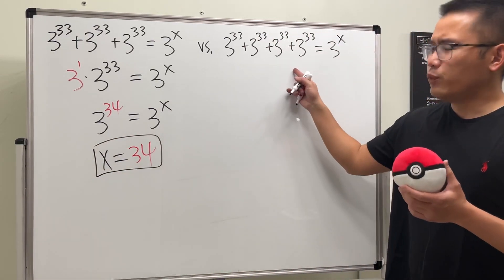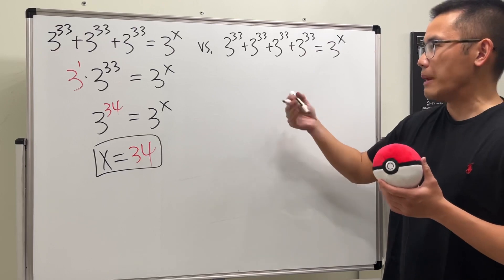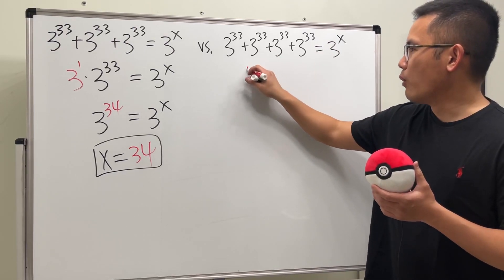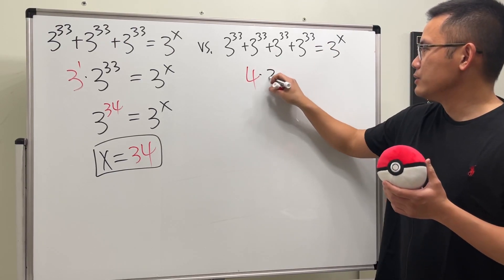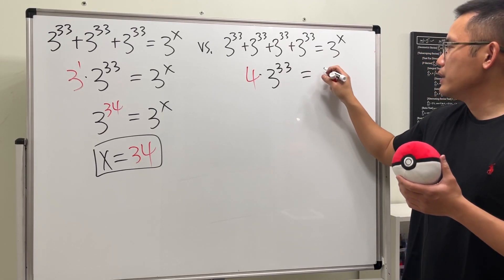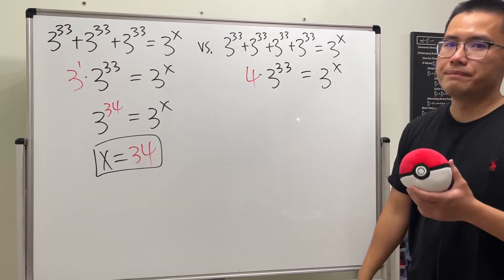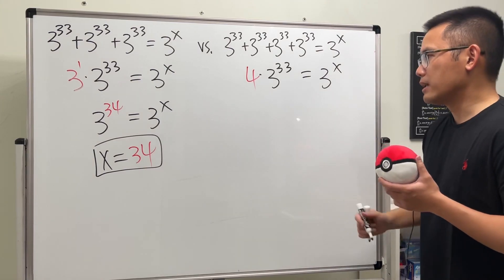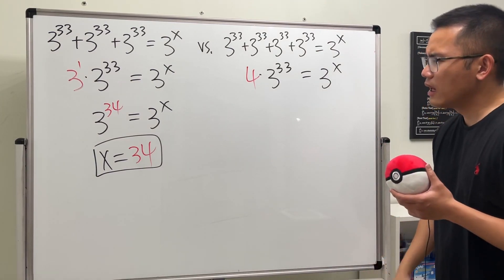Cool, but what if we have four of them? Same thing. Let's put down 4 × 3^33 = 3^x. I made this one up, by the way. How can we do this?